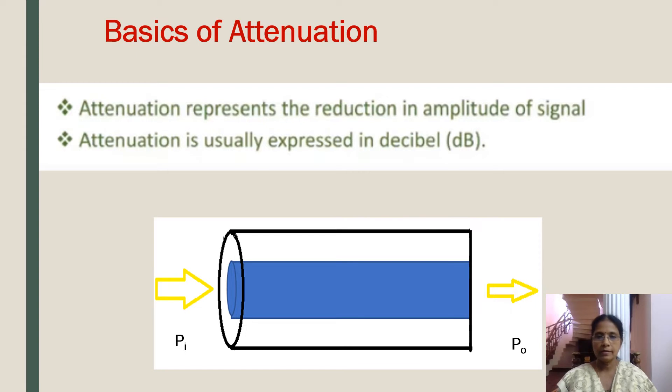Consider an optical fiber as shown in figure. Here the power input is represented as Pi and the output as Po.